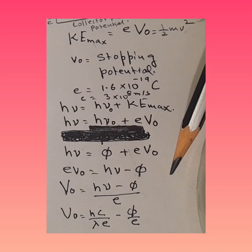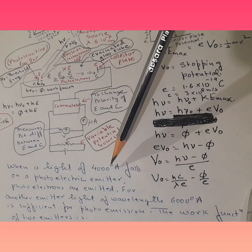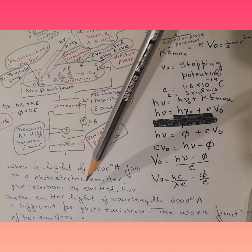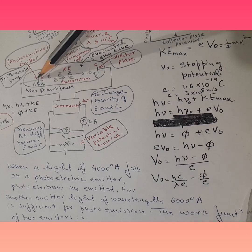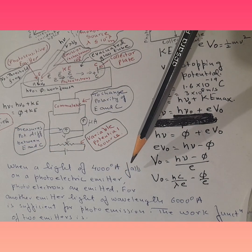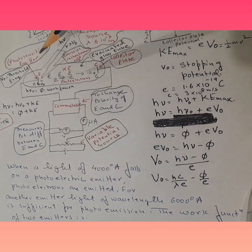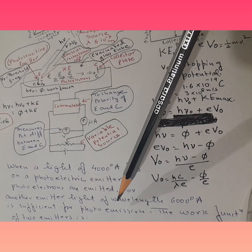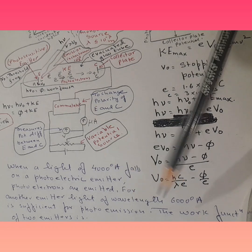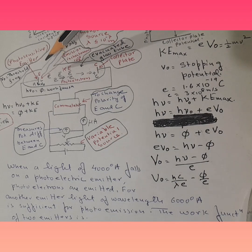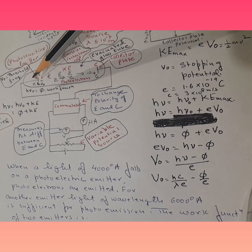Let's try out some numericals. When a light of 4000 angstrom falls on a photoelectric emitter, photoelectrons are emitted. For another emitter, light of wavelength 6000 angstrom is sufficient for photoemission. So in the first case it is 4000 angstrom, in the second case it is 6000 angstrom — these are two photosensitive, photoemitting plates.